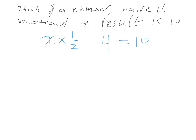So, X times a half minus 4 equals 10. Now, what we can do is clean that up a little bit, make it look a little bit more familiar. So, X over 2, because that's what we've got, minus 4 equals 10.